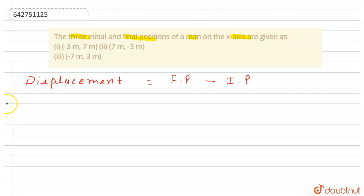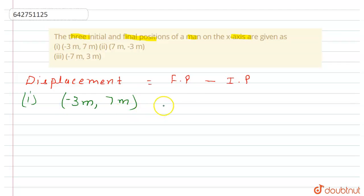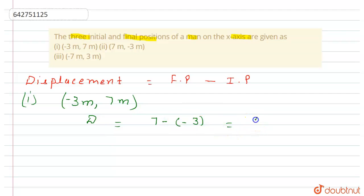In the first part, the initial position is minus three meters and the final position is seven meters. So the displacement is equal to final minus initial, which is seven minus of minus three, which equals 10 meters.